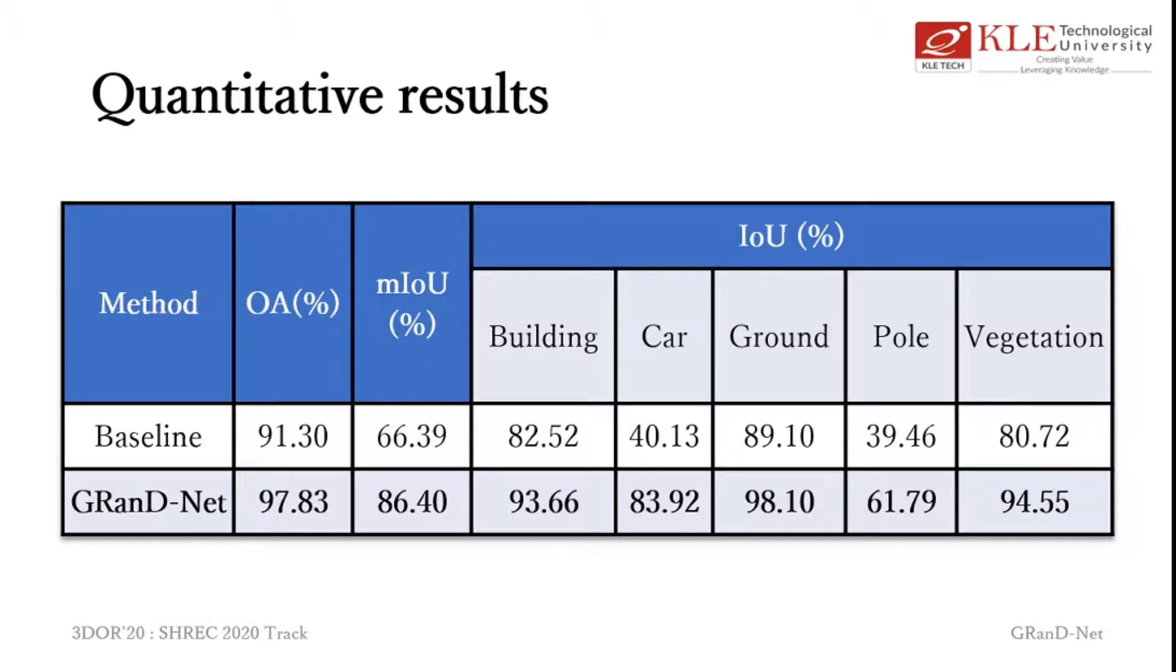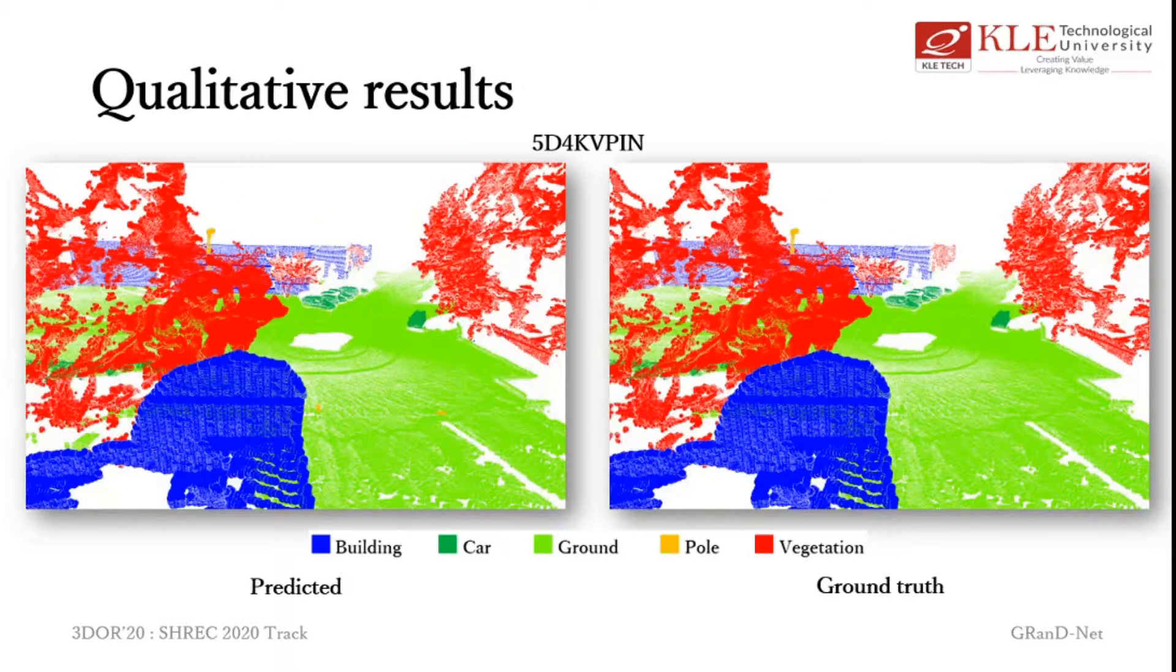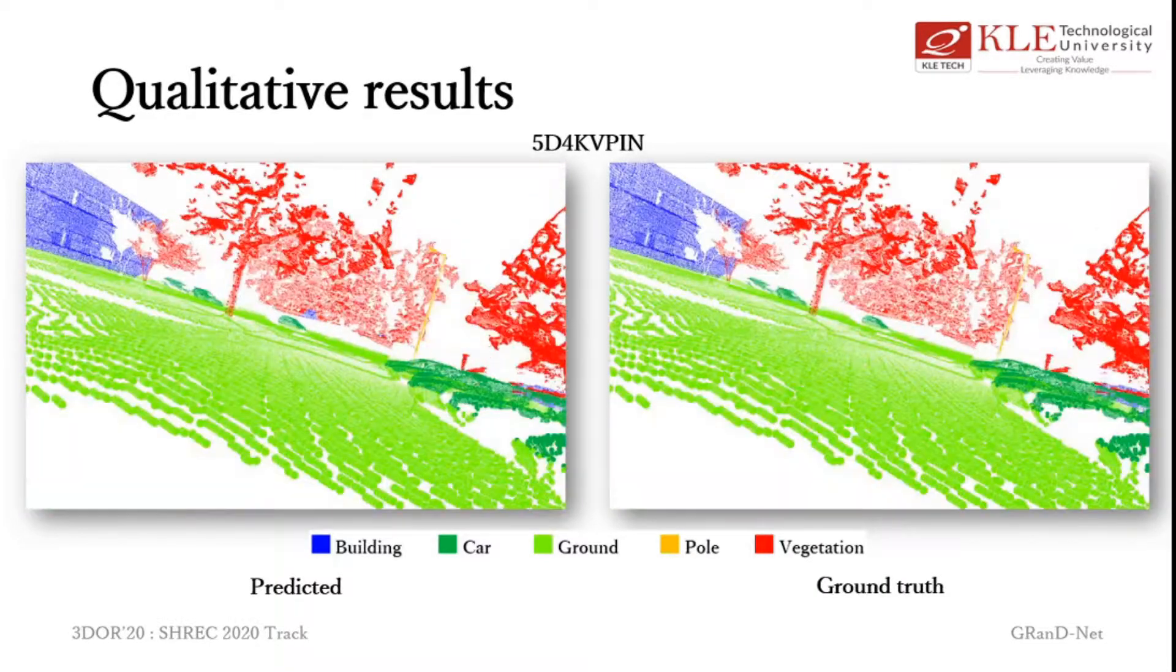The results of our model are shown in the table. An overall accuracy of 97.83% is obtained with an IOU of 86.4. The predictions for some of the scenes can be seen in the following slide.